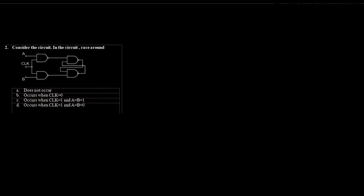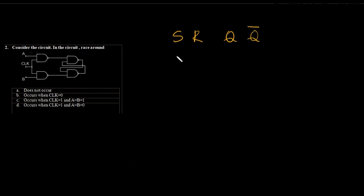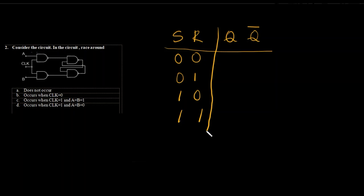Let's see question 2. Consider a circuit — in the circuit, a race around condition occurs at? If you know this circuit, this is nothing but an SR circuit. In SR, I have four states. Race around — when will I have race around?